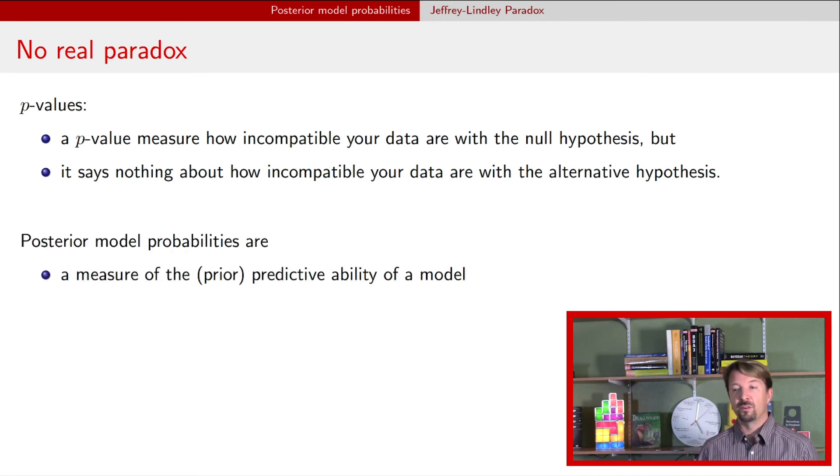In contrast, a Bayesian posterior model probability measures the predictive ability of a model via the prior distribution. But it's really not just about a model, it's really about that model relative to other models. So if you have a situation where all the models are bad, the posterior model probability will tell you these ones are worse than others, but won't tell you overall how bad those models are.